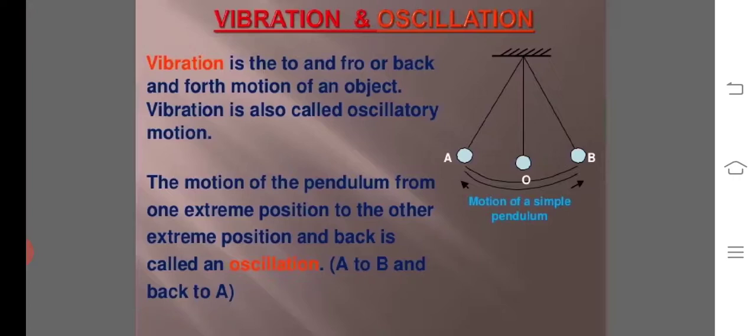Vibrations is the to and fro and forth motion of an object. Vibrations is called oscillatory motion. The motion of the pendulum from one extreme position to the other extreme position and back is called one oscillation.